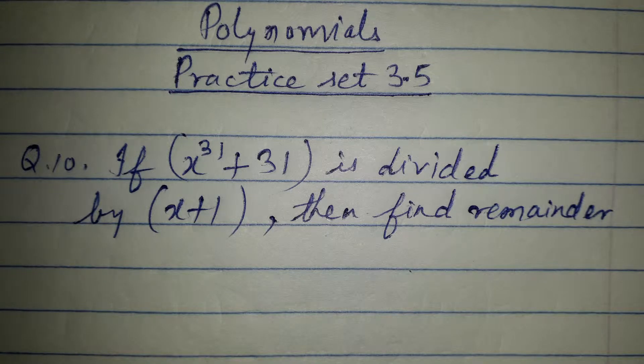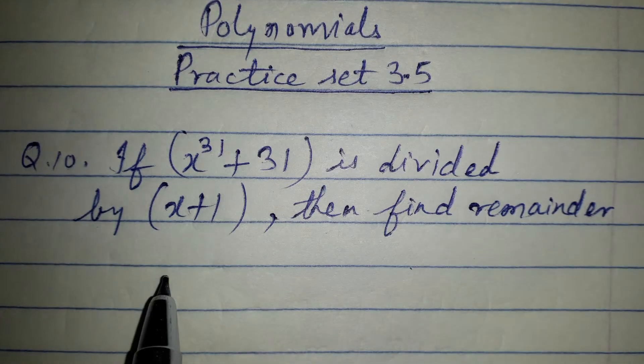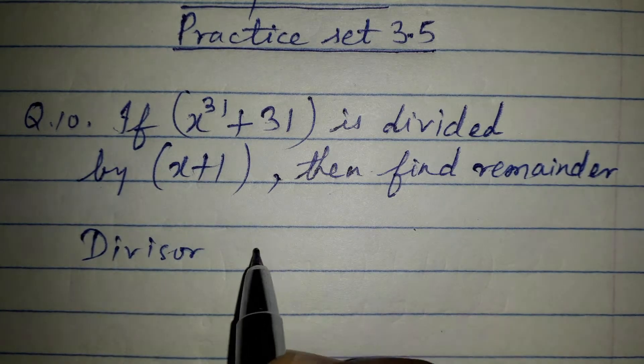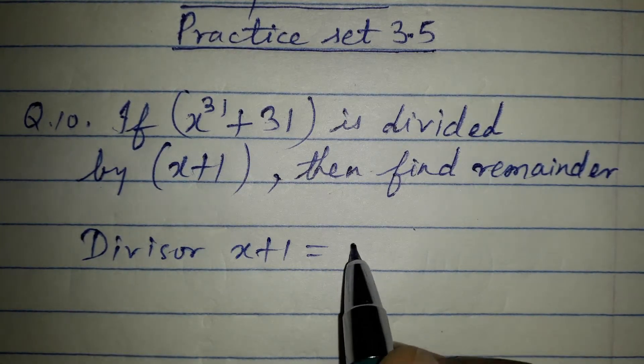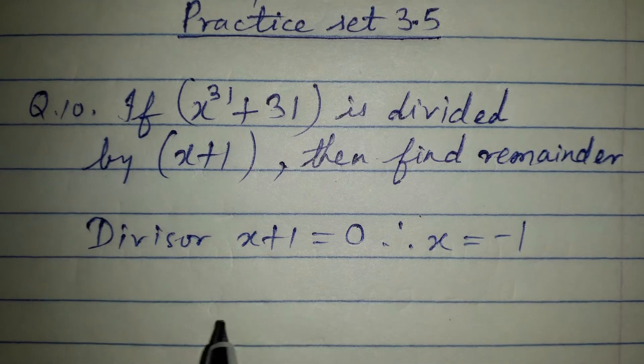What we have to do is take the divisor, that is x plus 1, and equate it to 0. So the divisor x plus 1 equals 0, therefore x is equal to minus 1.